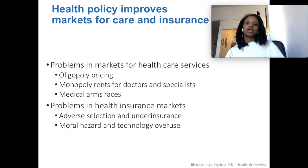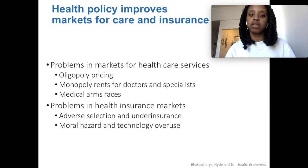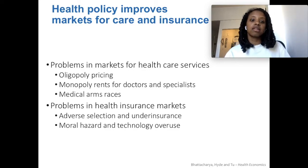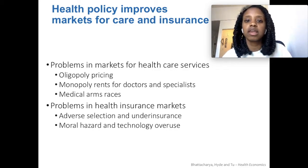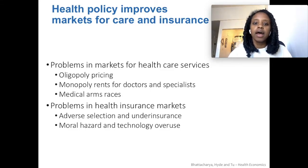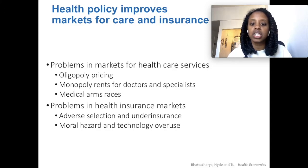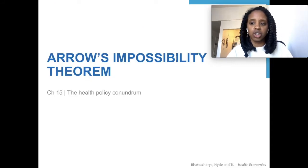Health care policy is meant to improve markets for health care and for health insurance, and we have some problems in these markets — things like monopoly pricing for doctors and specialists, medical arms races, and oligopoly pricing because there are so few providers often. And in health insurance we have the issues of adverse selection, under-insurance, and moral hazard and overuse. So policy tries to address these things.